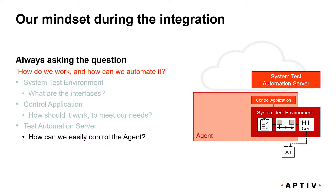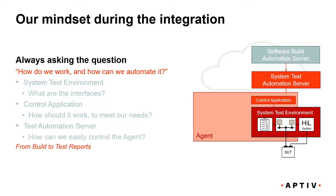How can we control the agent in a standardized way so that our system test automation server does not care what the agent really looks like? Once we have figured that out, how can we trigger our system tests from a successful software build? What information do we need — for example, information about the software binaries that are the artifacts of the latest successful build? Then how do we download the software binaries to the system test environment? Do we have tools that can automatically flash our system under test? And once we have flashed and executed our automated system tests, how can we push the generated artifacts — like test reports — back to the repository?